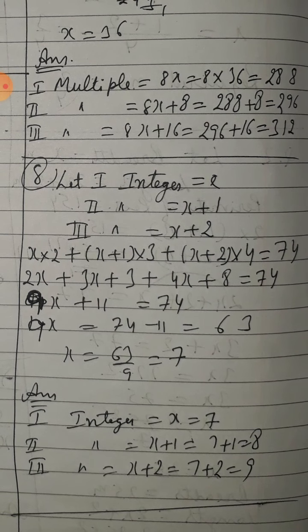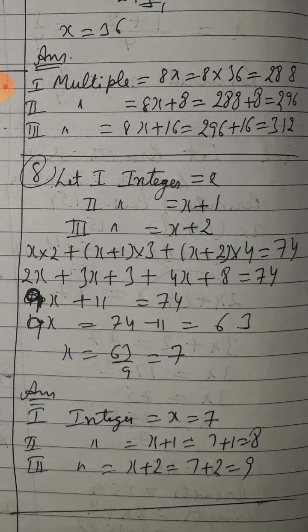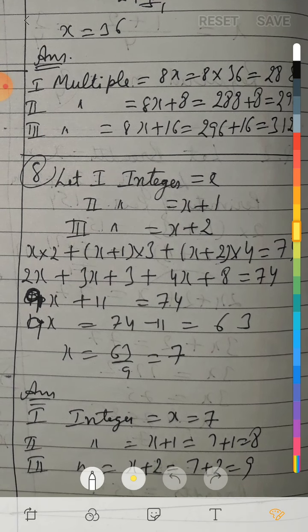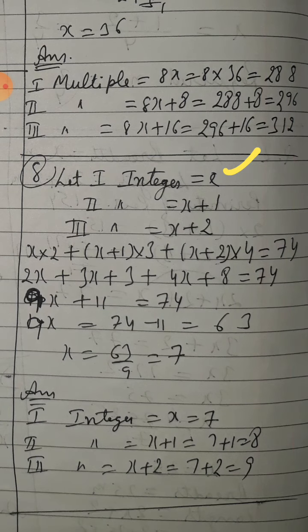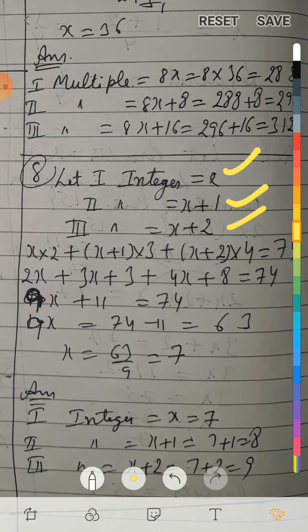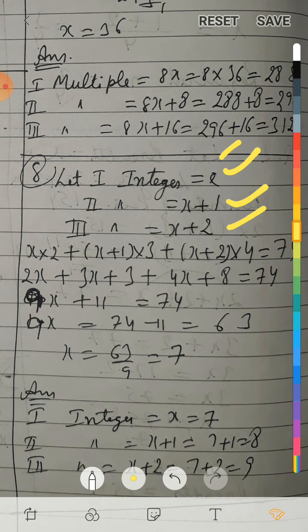Question number 8: 3 consecutive integers are such that when taken in increasing order, let first integer = x, second = x plus 1, third = x plus 2 (हर बार 1 add करते जाएंगे).